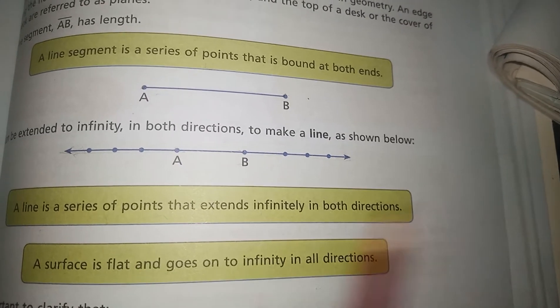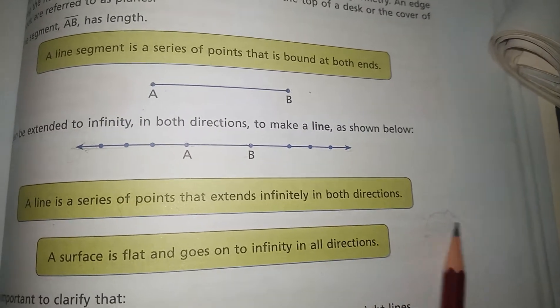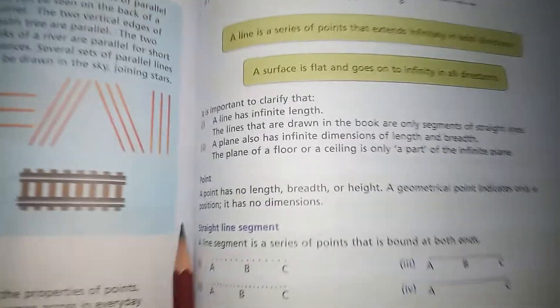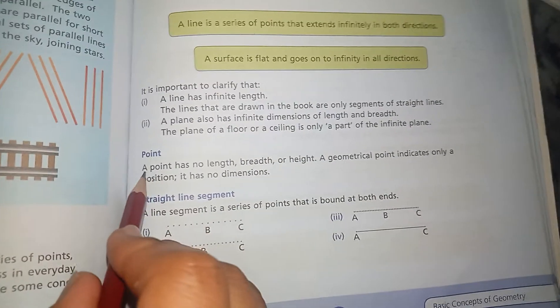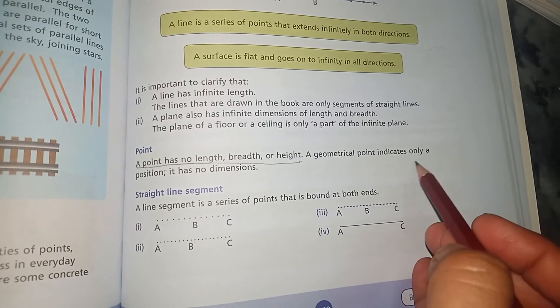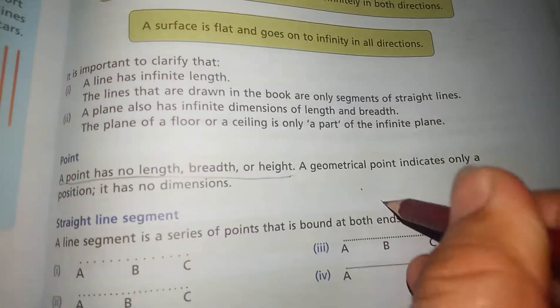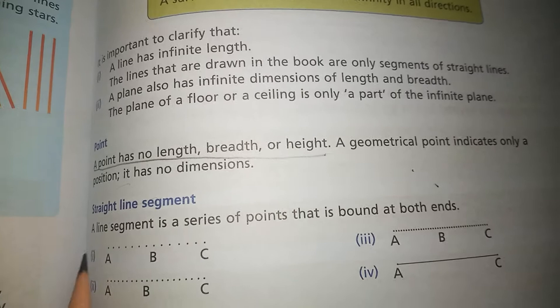A surface is flat and goes to infinity in all directions — any flat plane surface goes in all directions to an infinite extent. A point has no length, breadth, or height. A geometrical point indicates only a position; it has no dimension. This is a point — it has no length, width, or height.